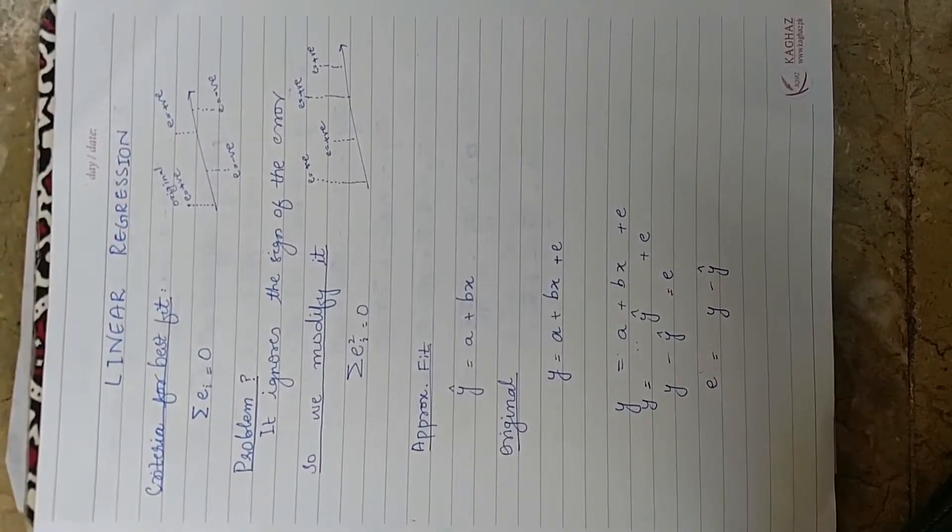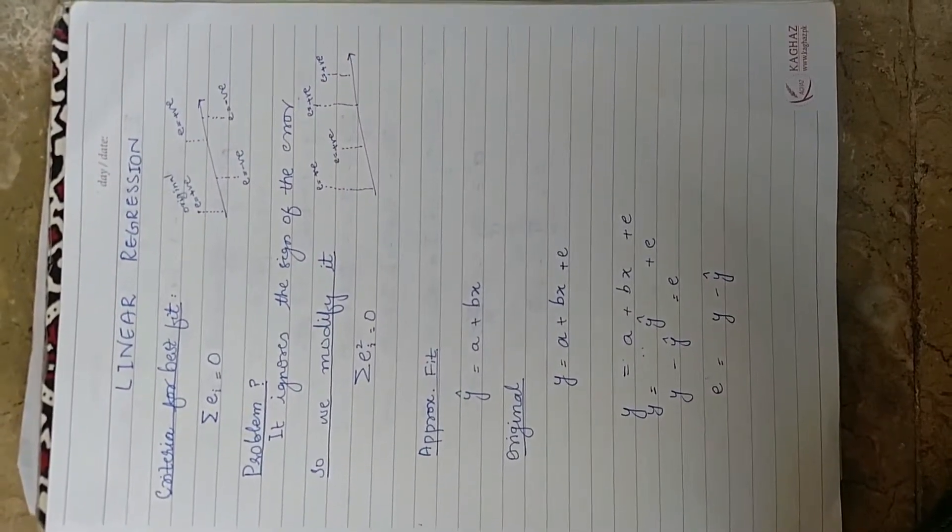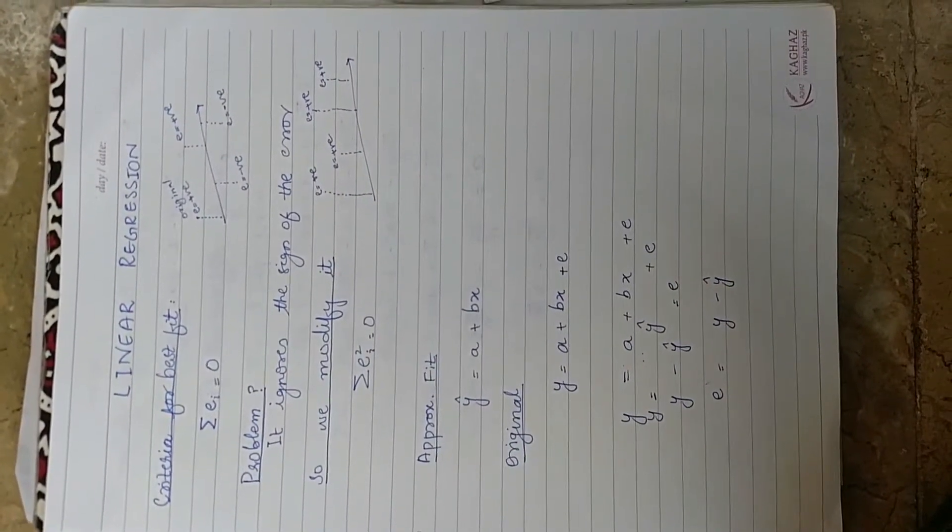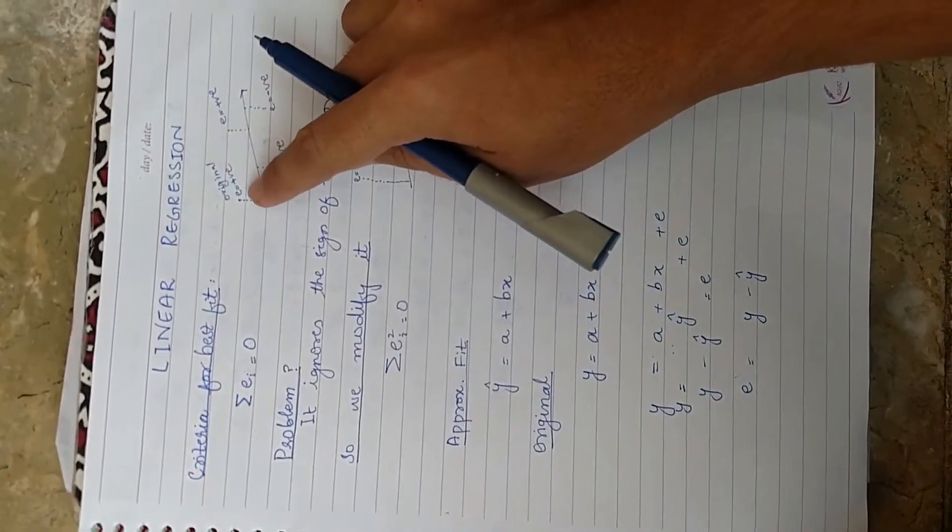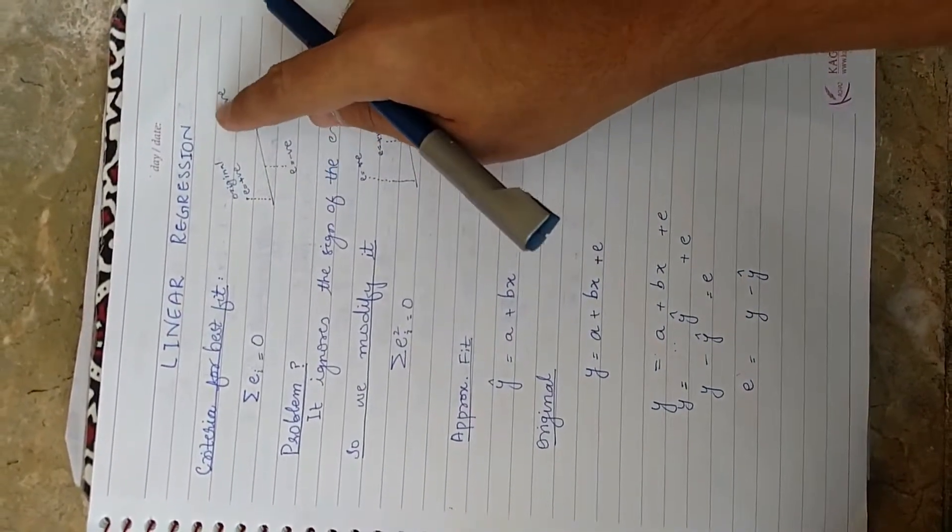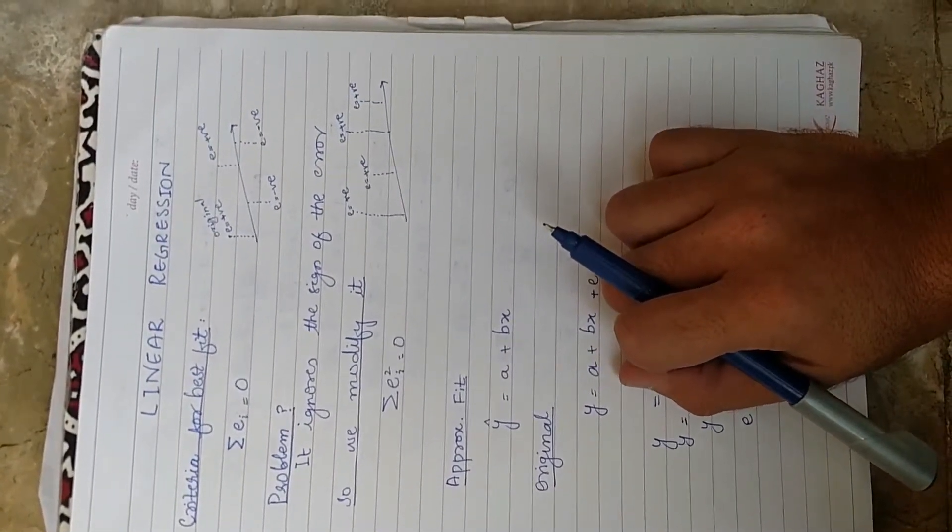Hello friends, today I am going to tell you how to find a line using linear regression. First, we have these four points x1, x2, x3, and x4. These points are formed using both coordinates.